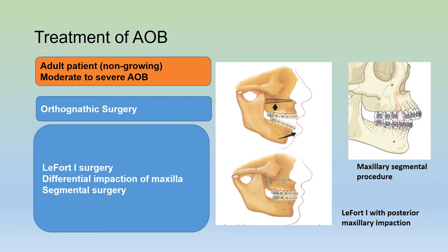In an adult patient where there is no growth and the anterior open bite is moderate to severe, one modality of treatment is orthognathic surgery. Usually this will be a Le Fort I procedure with a differential impaction of the maxilla. The maxilla is impacted posteriorly, and/or a segmental approach to the maxilla can also be used.